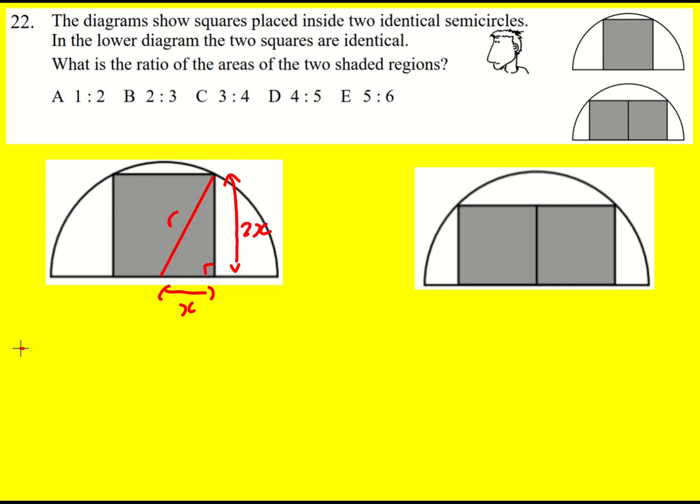Using Pythagoras's theorem then, x squared plus 2x all squared is equal to r squared, which means x squared plus 4x squared is r squared, or 5x squared is equal to r squared. Therefore, x squared is 1 fifth r squared.